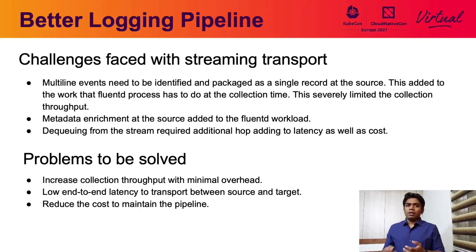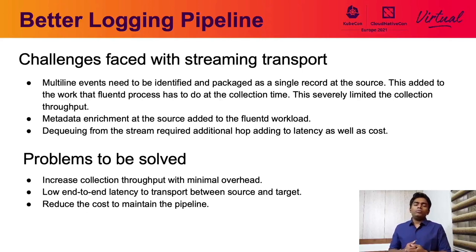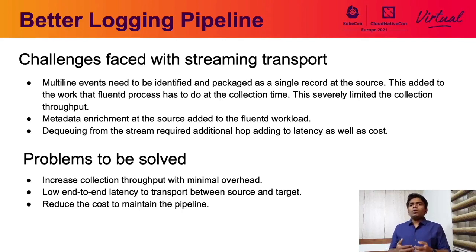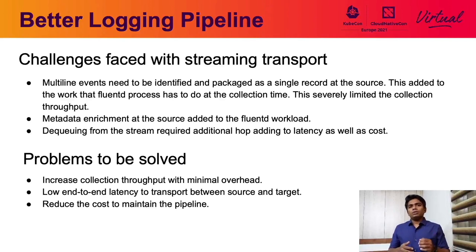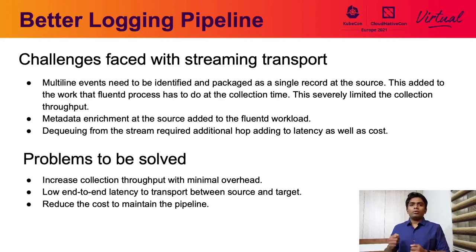To maintain this streaming pipeline, we had to have some persistent resources running. The log load that needed to be transported was extremely elastic, especially based on different times of the day. However, these resources, even with auto-scaling enabled, were not able to scale efficiently to match that log load. This was making the pipeline inefficient in terms of cost and it ended up being too expensive. So in simpler terms, the targets for the new pipeline were to increase throughput dramatically without increasing resource consumption proportionally, reduce end-to-end latency as much as possible, and minimize the cost needed to maintain it.